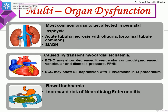Other organs affected in HIE include the kidneys — the most common organ affected in perinatal asphyxia. This can present as acute tubular necrosis with oliguria, with the proximal tubule commonly implicated. Sometimes the baby can simply have SIADH and may require fluid restrictions. The heart can have transient myocardial ischemia; 2D echo may show decreased left ventricular contractility and increased ventricular end-diastolic pressure, or the baby can have isolated PPHN.